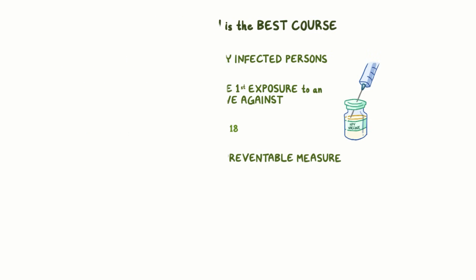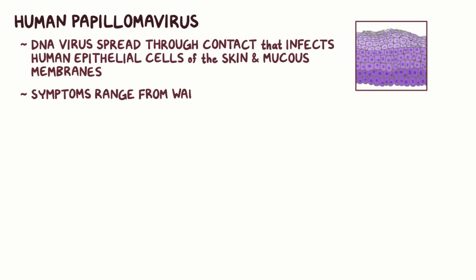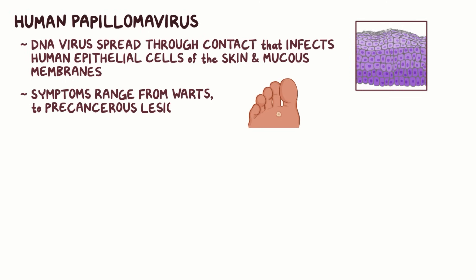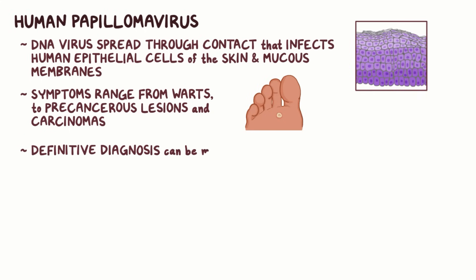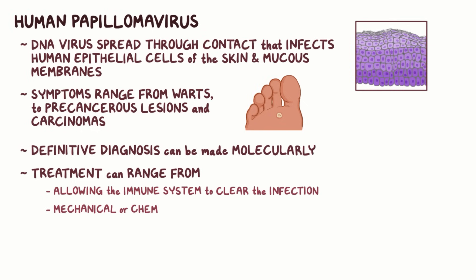As a quick recap: Human papillomavirus is a DNA virus spread through contact that infects human epithelial cells of the skin and mucous membranes. Symptoms can range from warts to precancerous lesions and carcinomas. Definitive diagnosis can be made molecularly, and treatment can range from allowing the immune system to clear the infection to mechanical or chemical removal of infected cells.